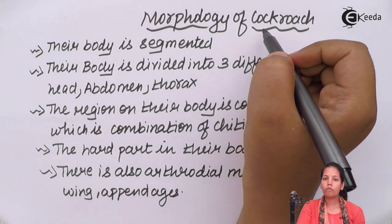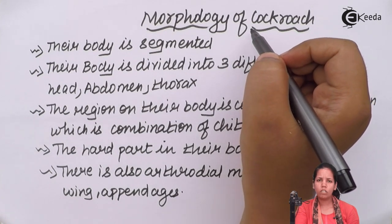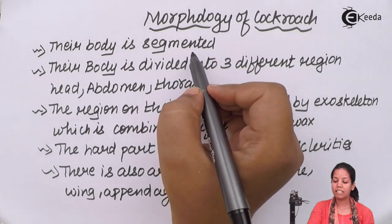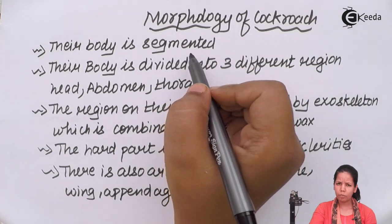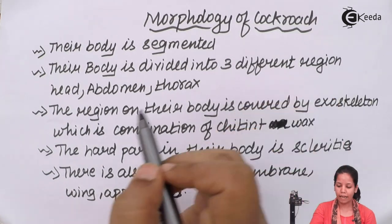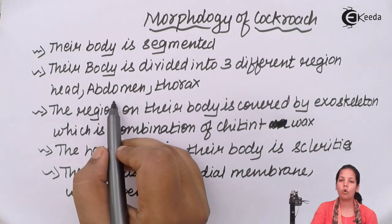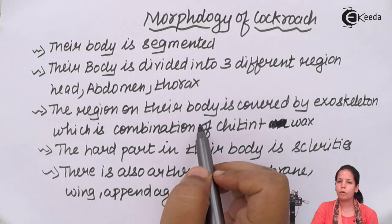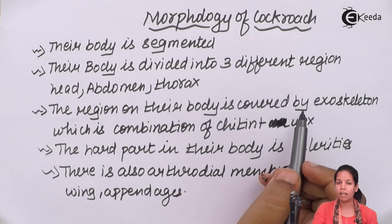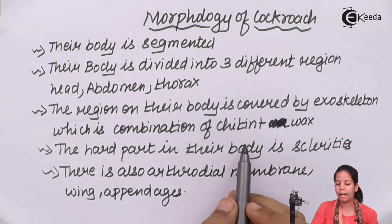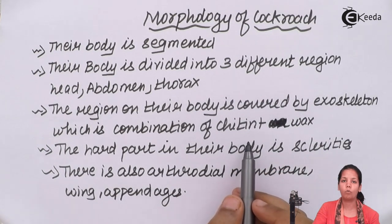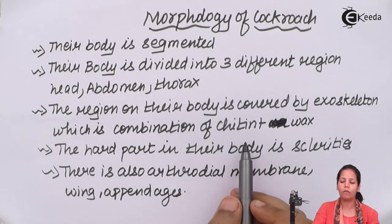The body of a cockroach is segmented and divided into three different regions: the head region, the abdomen region, and the thorax region. The body surface is covered by a thick combination made up of chitin and wax, which is impermeable to water and gives resistance to the body of the cockroach.